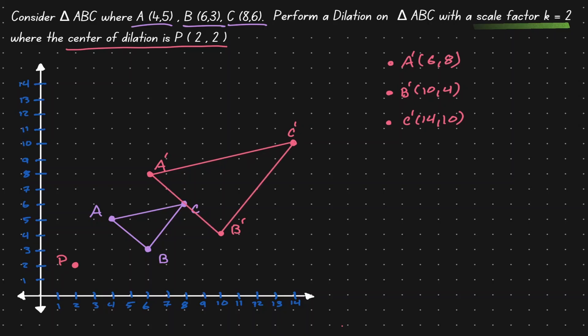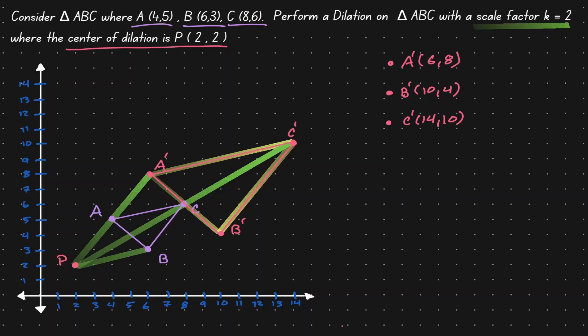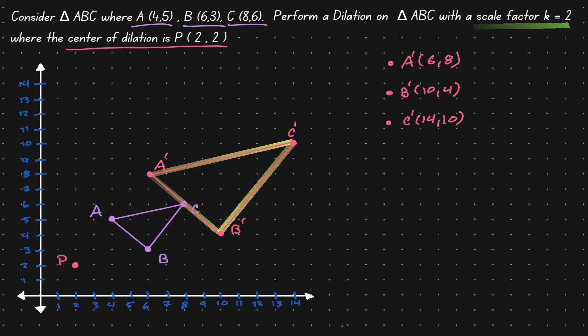Let's understand our result. This triangle A prime, B prime, C prime is the result of a dilation from P on the original triangle A, B, C. If we were to have a different scale factor — let's say a scale factor of three — we would have to triple the same movement as we just did.